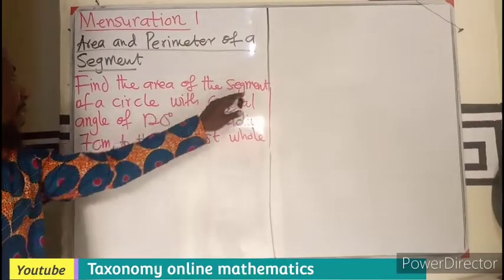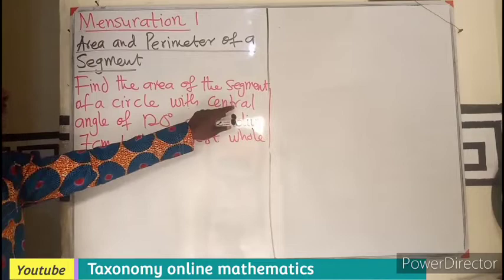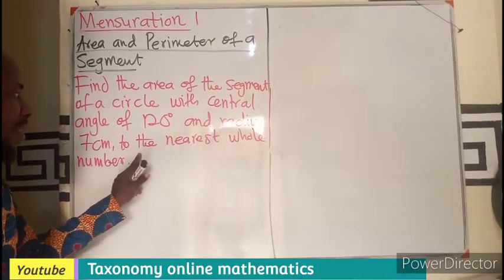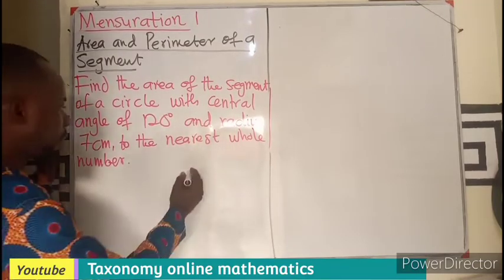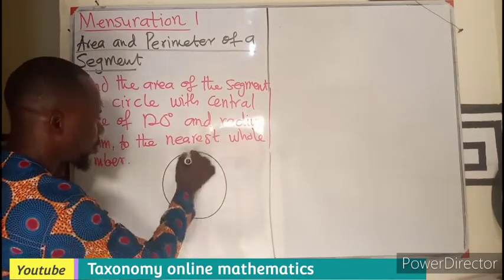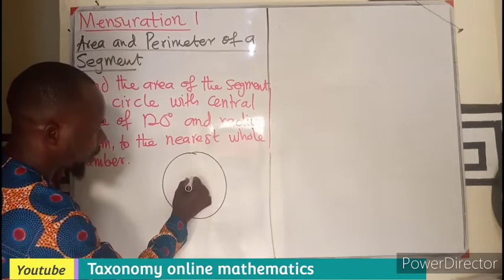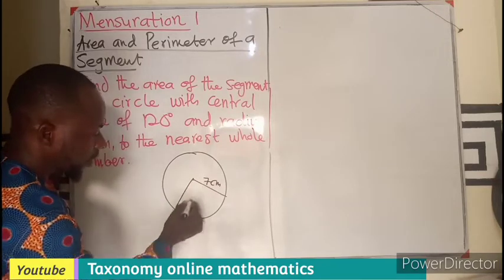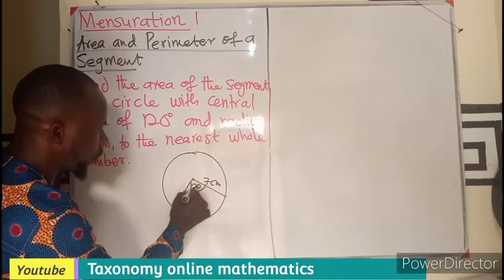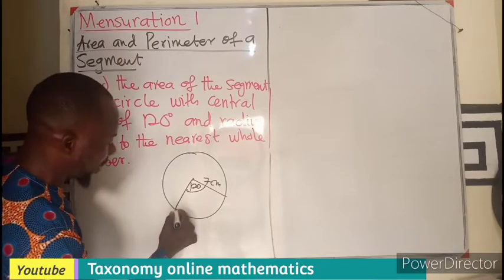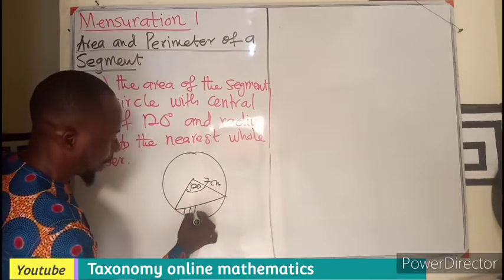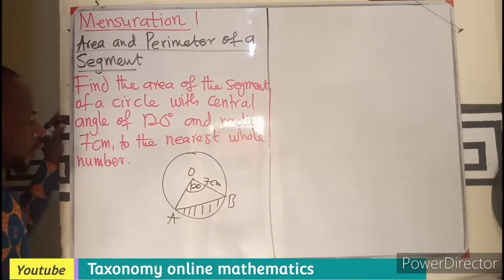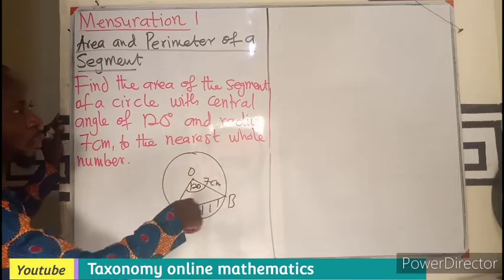So, find the area of the segment of a circle which had the center angle of 120 and a radius of 7 cm. The answer is to be the nearest whole number. So, let's draw our circle. This is 7 cm. The angle is 120. Then, we can have this sector. So, the first thing to do is to find the area of the whole sector.